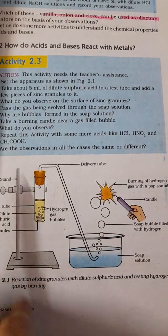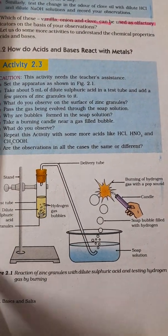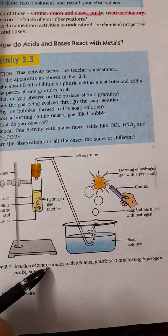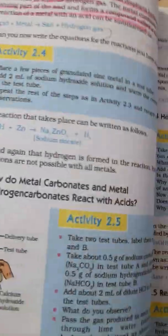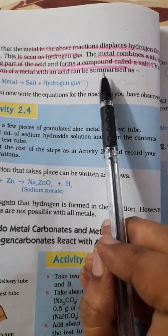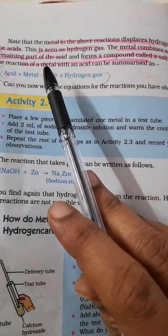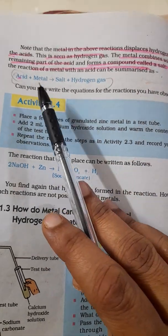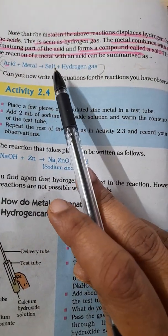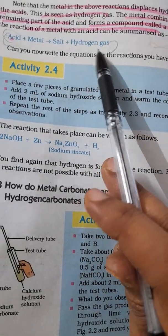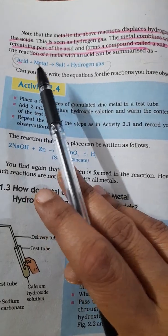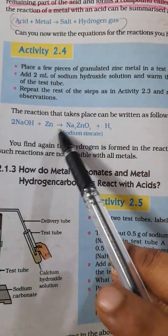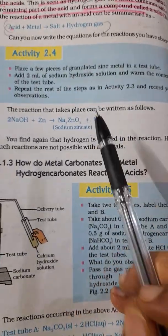You can see that soap bubbles filled with hydrogen are formed. The metal in this reaction displaces hydrogen from the acid — zinc displaces hydrogen from sulfuric acid. The metal combines with the acid to form a compound called salt, and at the same time hydrogen gas is evolved. To summarize: acid + metal → salt + hydrogen gas.